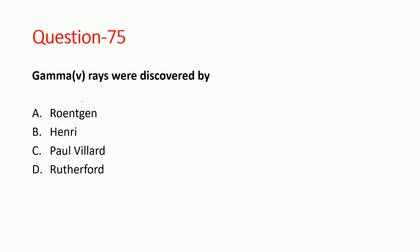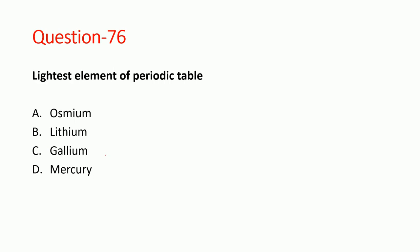Next question: gamma rays were discovered by Paul Willard. Rutherford, Henry, and Compton are wrong. Paul Willard is the correct answer. Next question: the lightest element in the periodic table is generally hydrogen, then helium, then lithium. Since hydrogen is the lightest but lithium is given in the option, option B — lithium — is correct.